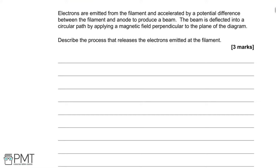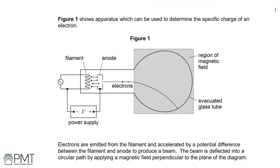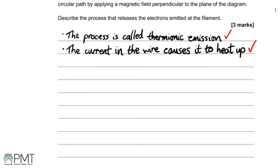Describe the process that releases the electrons emitted at the filament. The best thing to do first of all is to name that process — that's called thermionic emission, and that will get you your first mark. In describing this process we've got to mention two things: firstly that passing the current through that piece of wire is going to cause it to heat up. And then secondly, relating that increase in temperature to an increase in thermal energy of the electrons so they are then able to leave the surface of the metal.